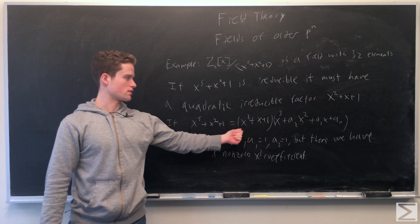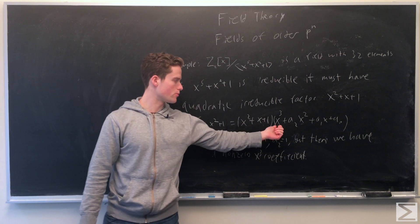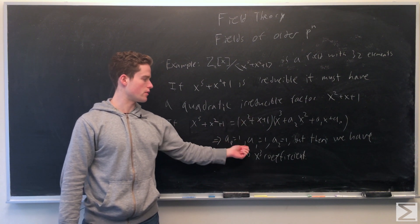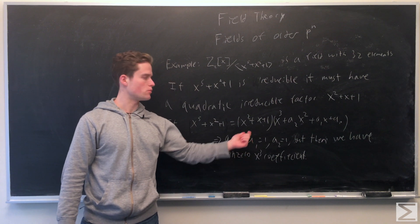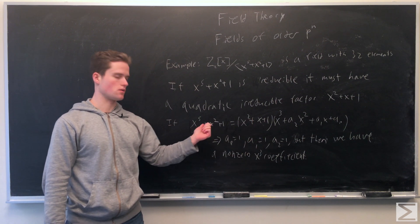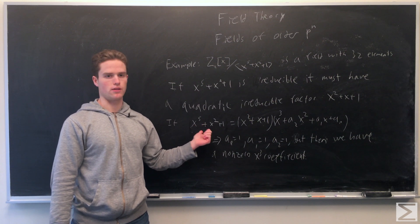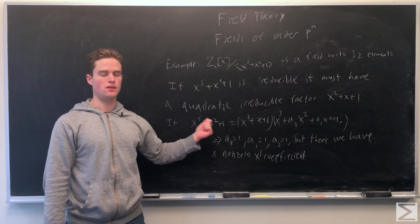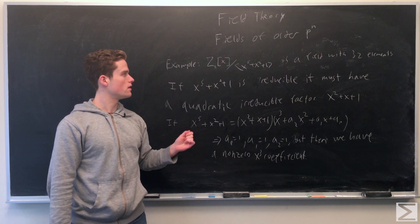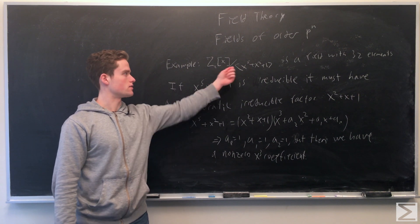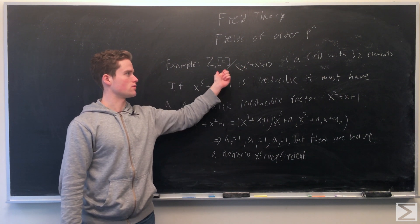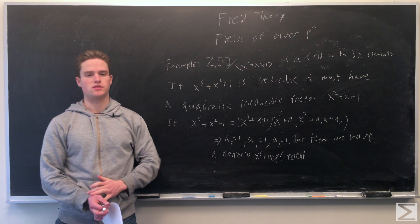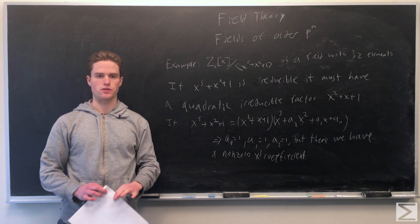If x^5 + x^2 + 1 equals (x^2 + x + 1) times some cubic polynomial, then multiplying this out and looking at the coefficients we get a_0 = 1, a_1 = 1, a_2 = 1, but from these we get a non-zero x^3 term which is not what we have on the left side. So no such factorization exists, and x^5 + x^2 + 1 is irreducible. Therefore this quotient is a field with 32 elements. Thanks for watching — please check out centerofmath.org, our blog, and follow us on Facebook and Twitter.